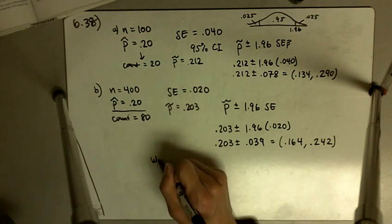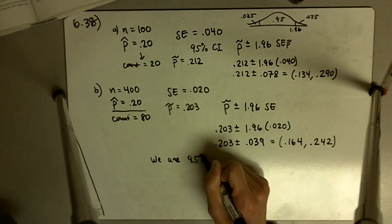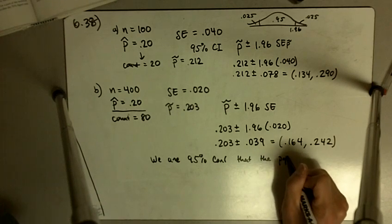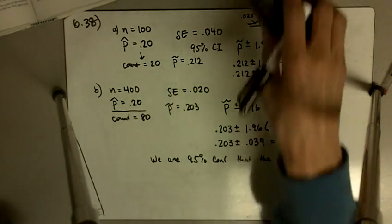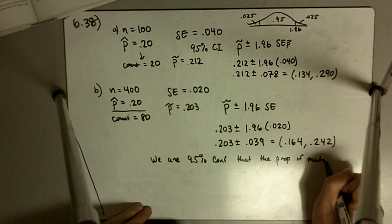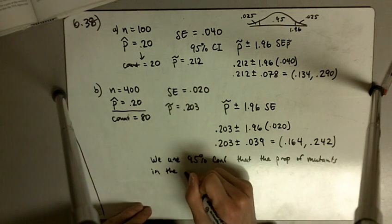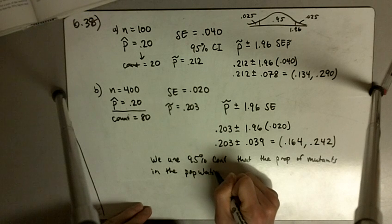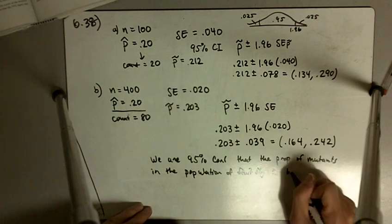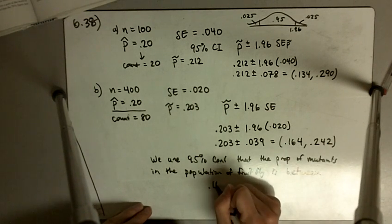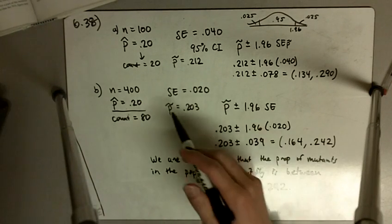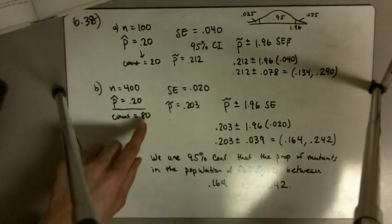And so I can just write, we are 95% confident that the population proportion, or maybe I'll say that the proportion of mutants is between 0.164 and 0.242, based on my sample of 400 fruit flies and 80 mutants.